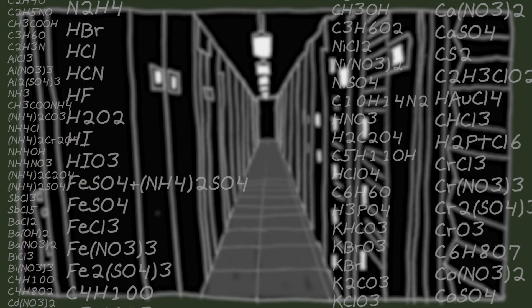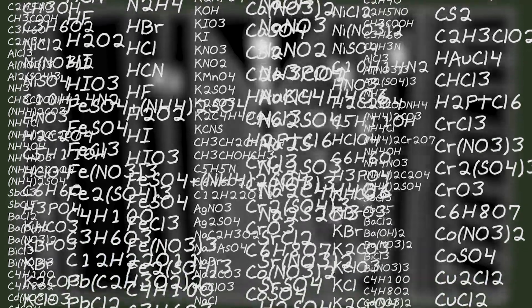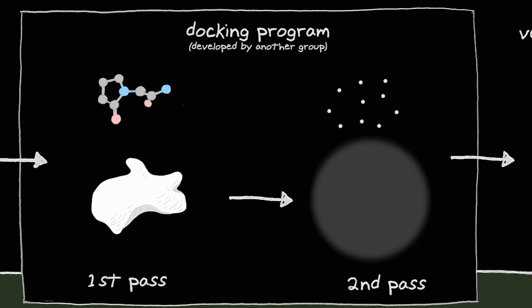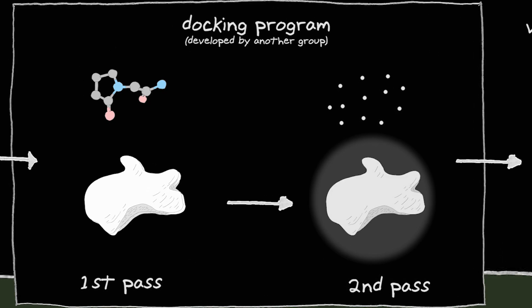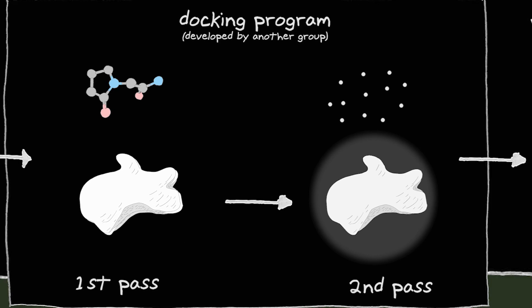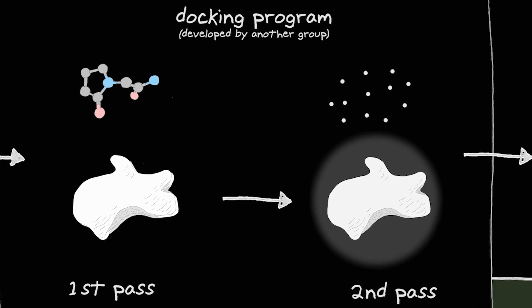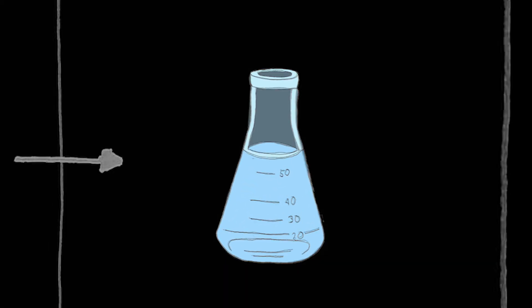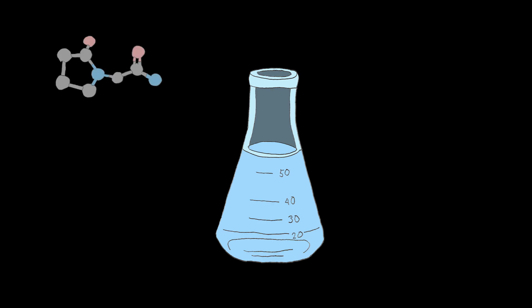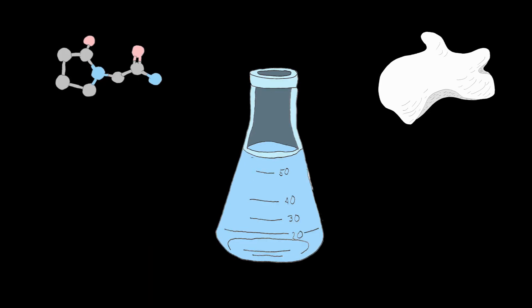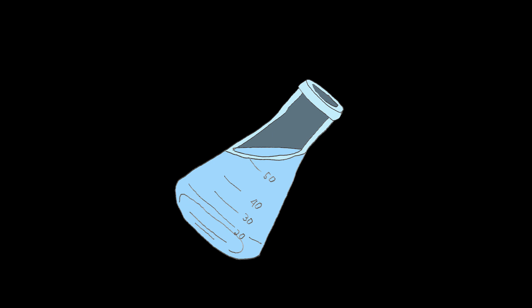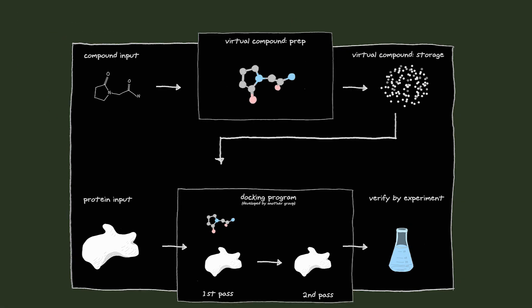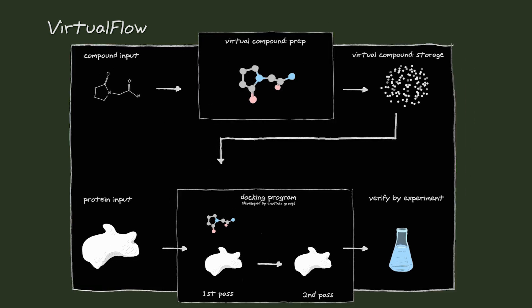This is repeated hundreds of millions of times in parallel by all of those computer cores. Virtual Flow then takes the stickiest compounds, the top contenders, and retests them but this time with greater precision. With our list of likely candidates, typically about a hundred, we leave the virtual world, go to the lab and test the actual compounds with actual proteins. Traditional real world screening methods test only hundreds of thousands of compounds per experiment. Virtual Flow can test a billion or more and it can do it faster and for far less cost.